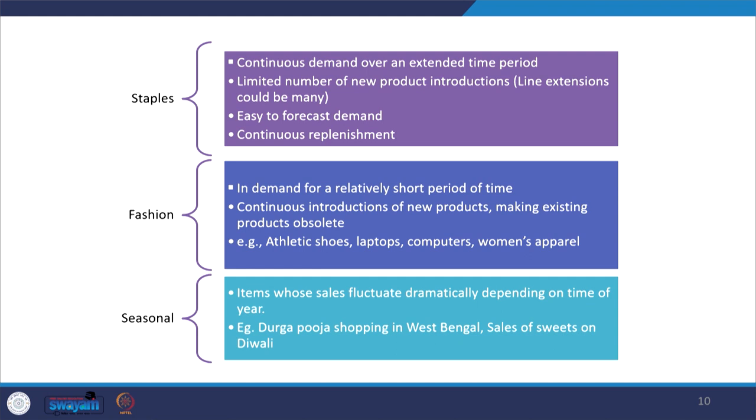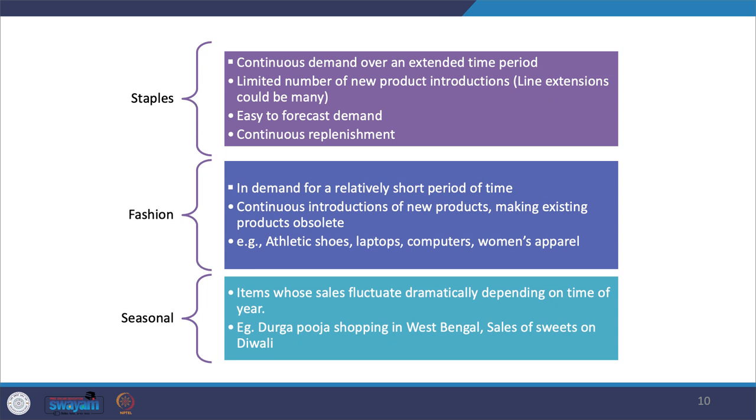For staples, it becomes very easy to forecast demand because you already have so much data to look into or extrapolate. The chances of errors are quite less. As far as inventory management is concerned, continuous replenishment works best for staples — as and when stock reaches the minimum threshold, orders are automatically placed if you have an automated inventory management system.